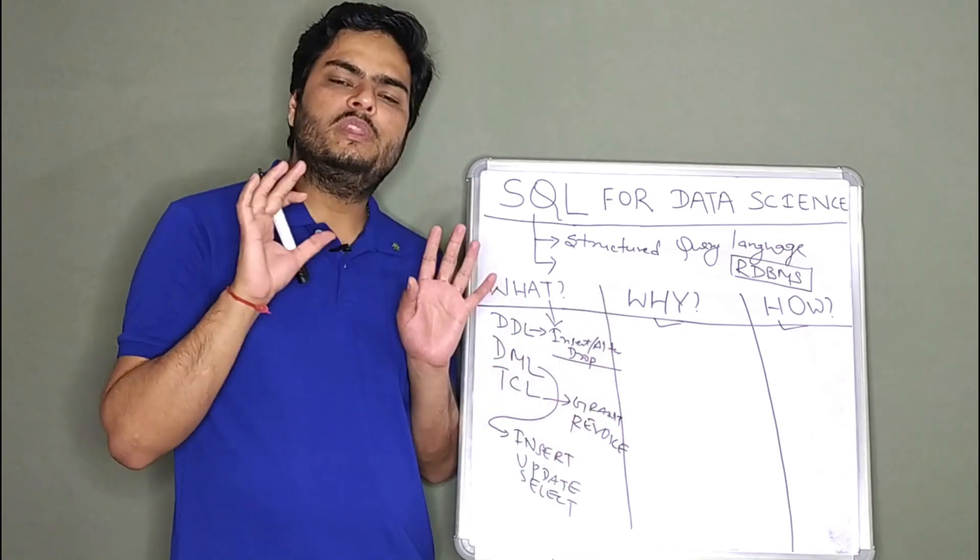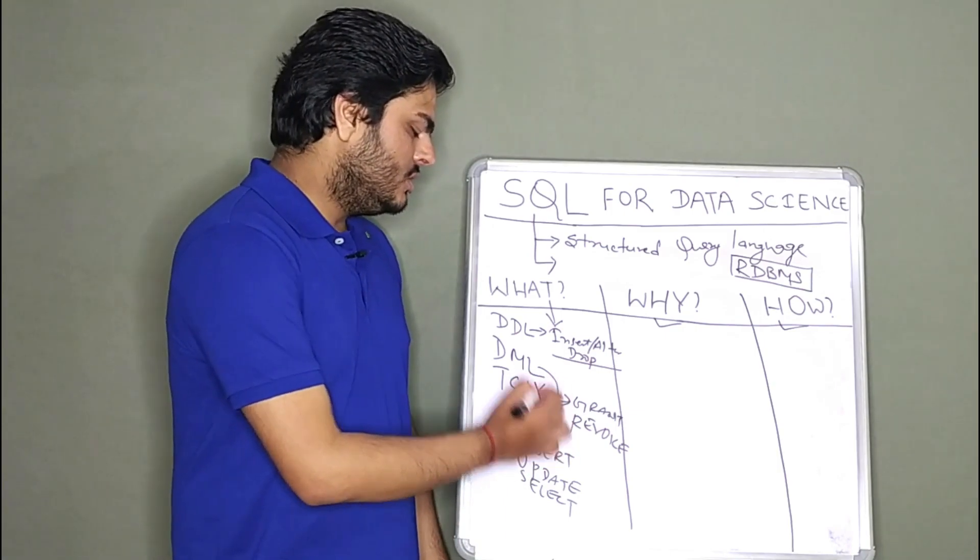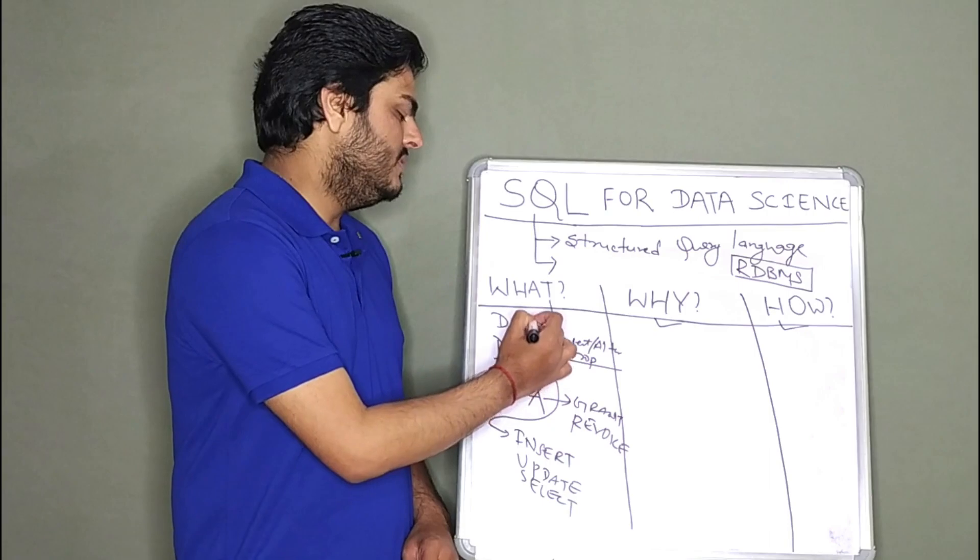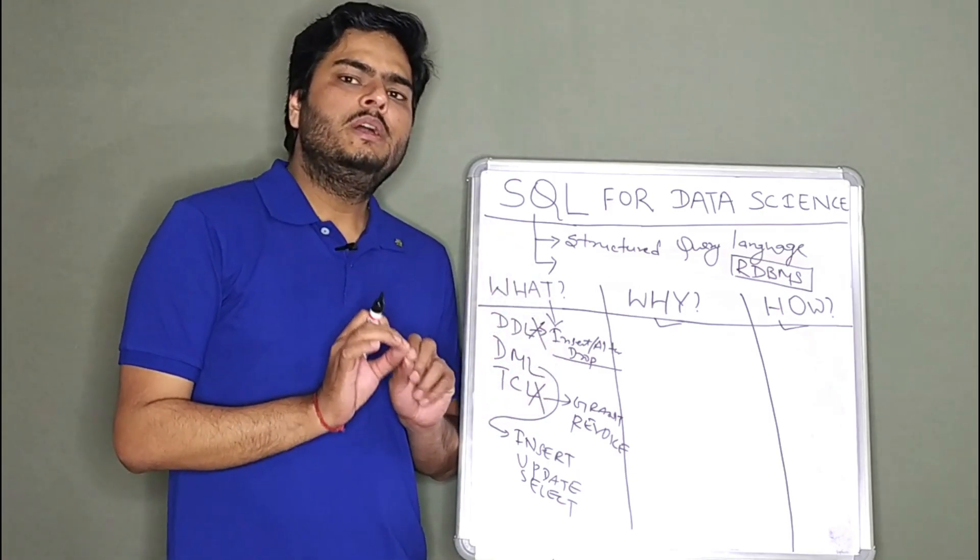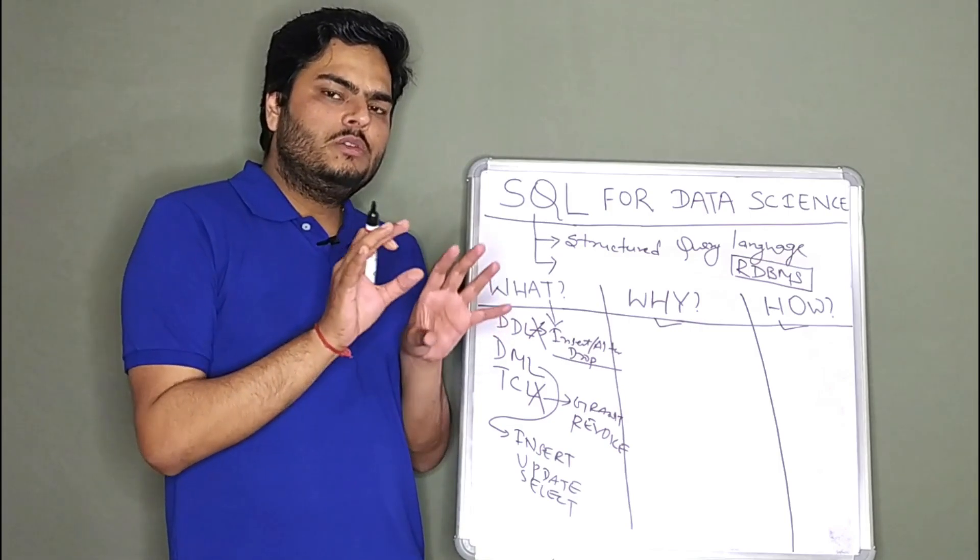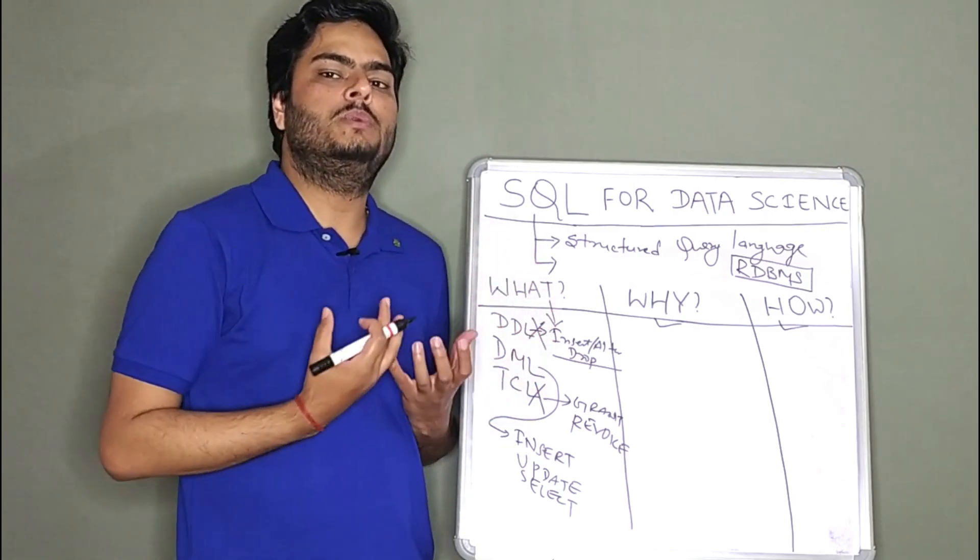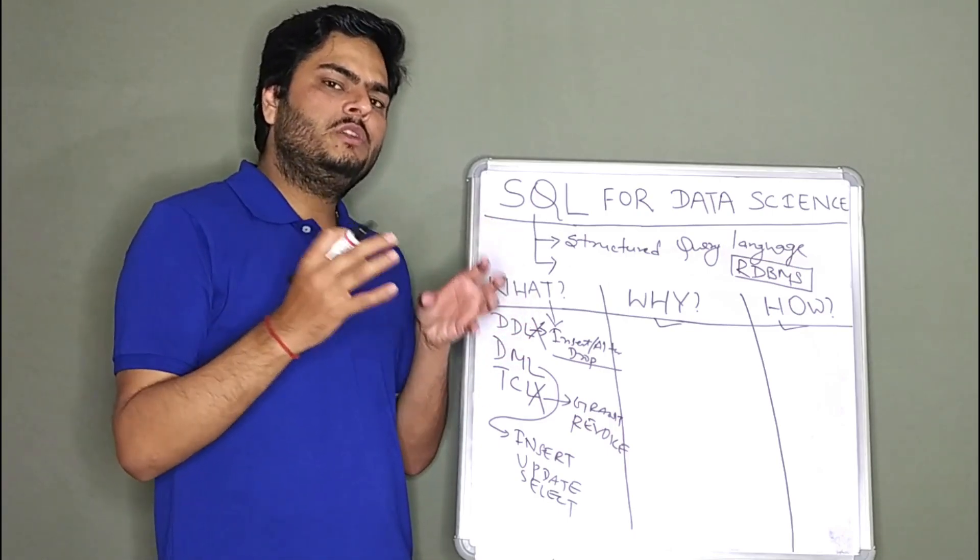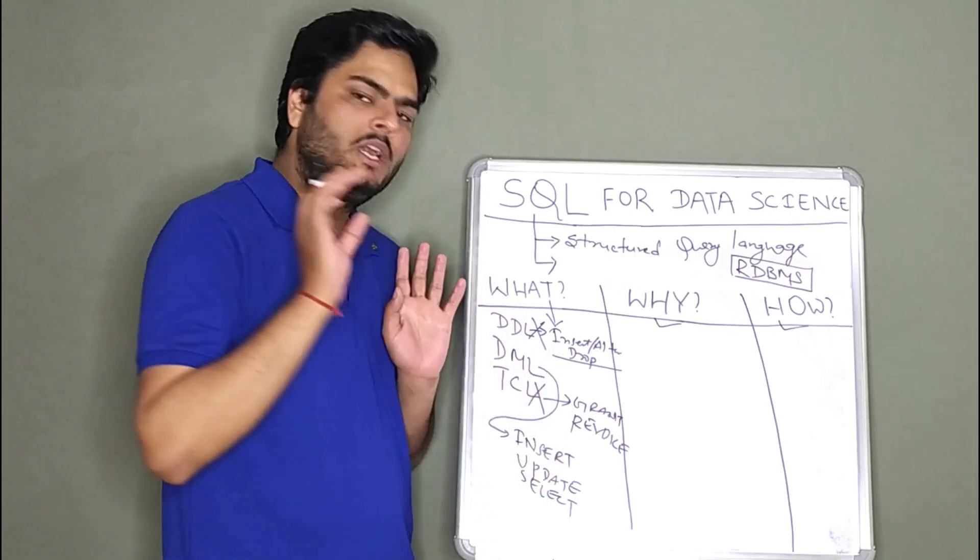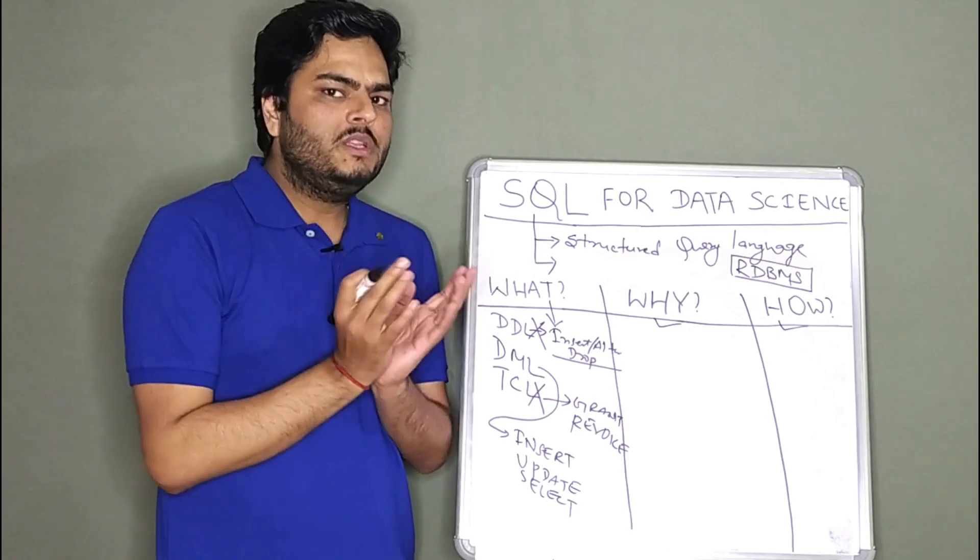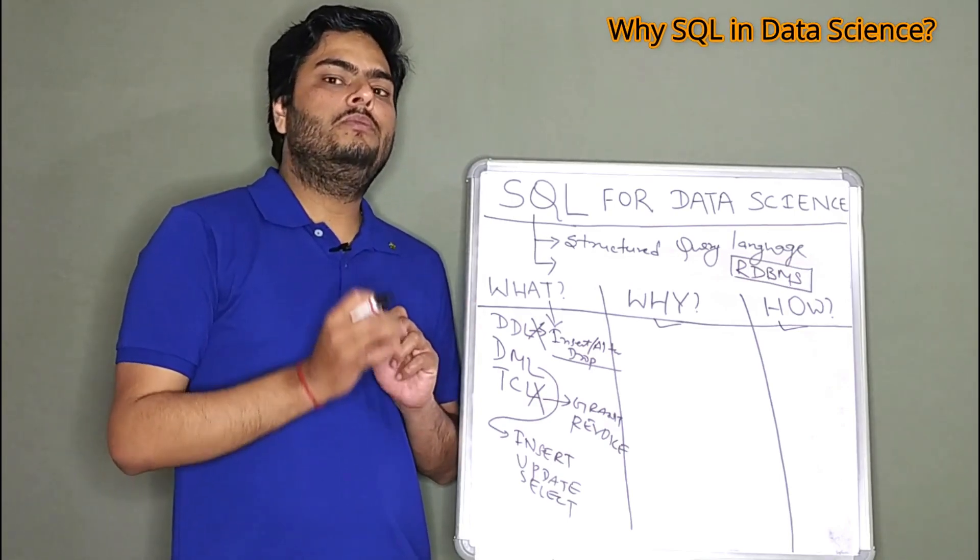Now why I'm explaining you all this is the important thing to understand here is as a data scientist, 95% of the time, we do not need to do transaction control. We do not need to do data definition. What we should focus on and what we need is data manipulation language. In simple terms, data is stored somewhere as a data scientist, we just view the data, we just see how the data is and use that data. We are the consumers. We are not the creators or destroyers. We are the consumers. Core data science I'm talking about. If you include some bit of data engineering, then maybe these will come under your role, but not generally. So what we should focus on is data manipulation language. Important things to do there: viewing the data, observing the data, doing some analysis on the data.